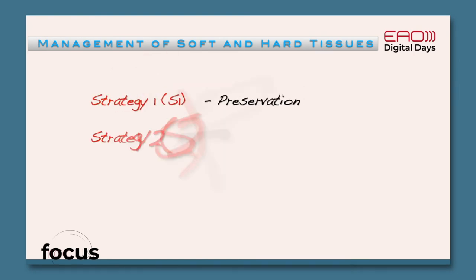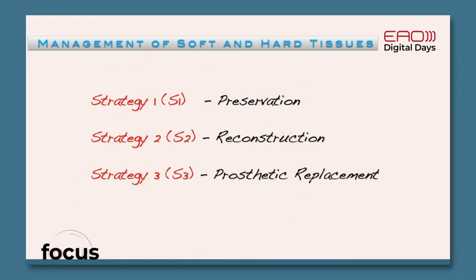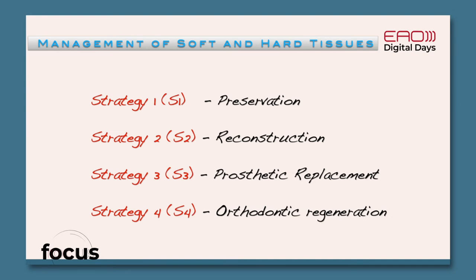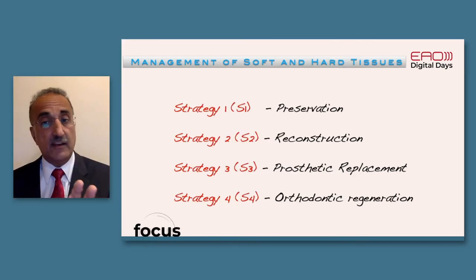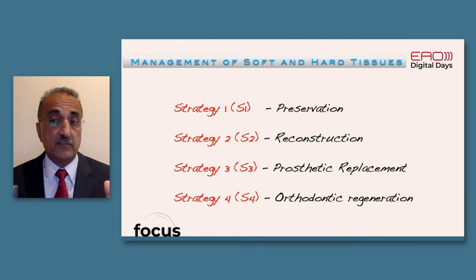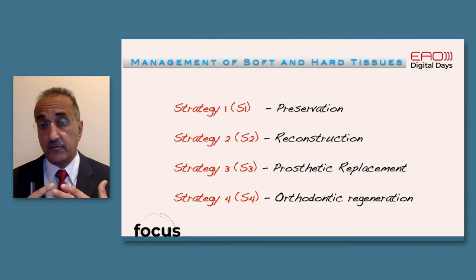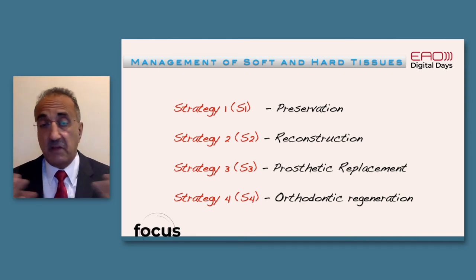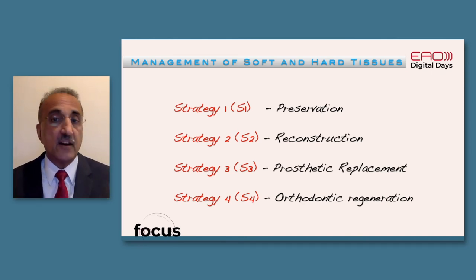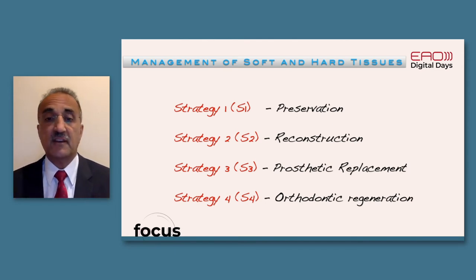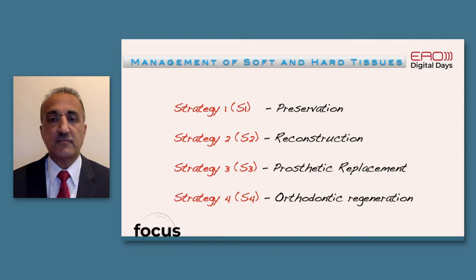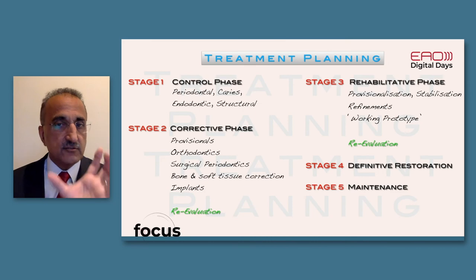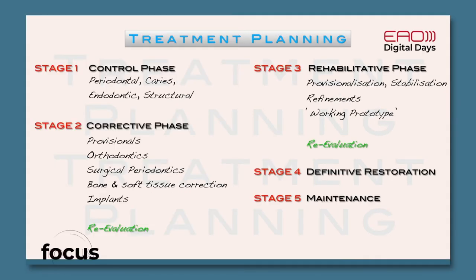Traditional approaches and strategies include preserve, immediate placement, reconstruct, or prosthetically replace. In this case many would accept extracting all teeth and going for a conventional all-on-four or all-on-six approach with prosthetic gingiva - that would be very acceptable. But are there other approaches to improve maintenance possibilities for the patient? Orthodontic regeneration is the fourth strategy we like to employ.